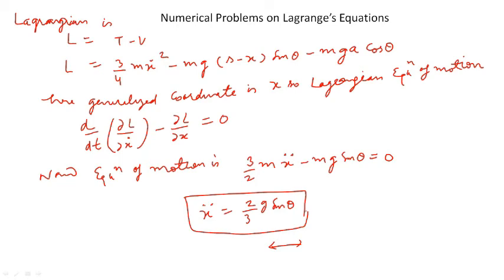The Lagrangian is L = T − V = (3/4)Mẋ² − Mg(S − x)sinθ − Mga cosθ. Here x is the generalized coordinate. The Lagrangian equation of motion is d/dt(∂L/∂ẋ) − ∂L/∂x = 0. Substituting the partial derivatives, the final solution gives ẍ = (2/3)g sinθ. So the disk has acceleration equal to (2/3)g sinθ. Thank you.